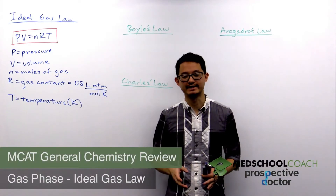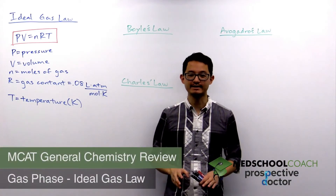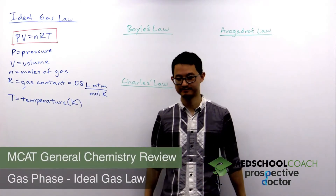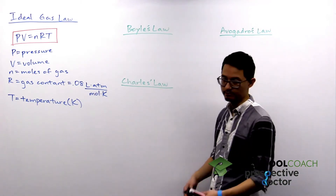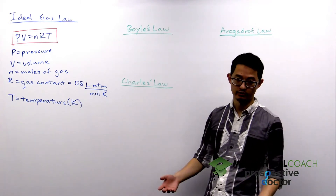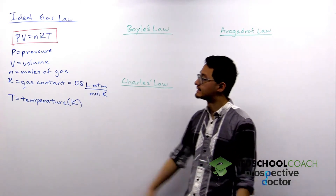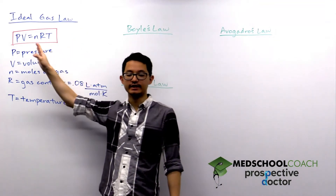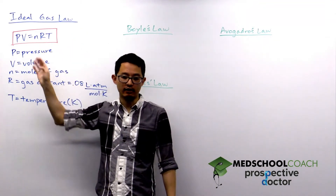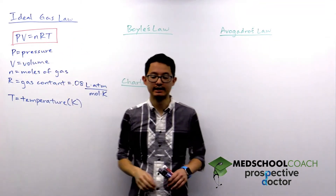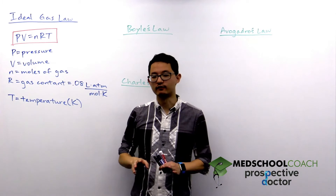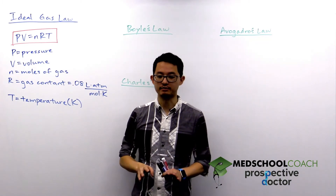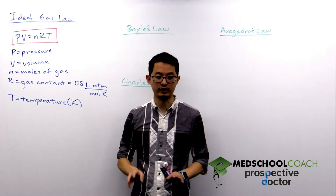In this video we're going to discuss the different gas laws that you need to know for MCAT. The first gas law and perhaps the most important one is the ideal gas law, PV equals nRT. This equation is very helpful for doing a whole bunch of different types of calculations for MCAT.